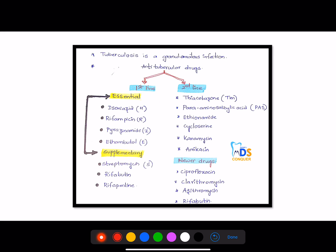So this is the classification of anti-tubercular drugs. Basically, tuberculosis is a granulomatous infection. These anti-tubercular drugs are of two types: first-line drugs and second-line drugs. Again, first-line drugs are of essential drugs and supplementary drugs.